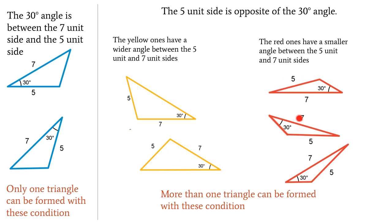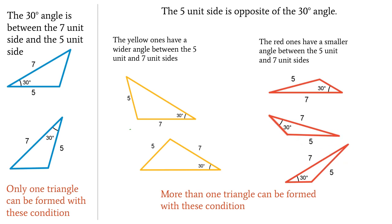The yellow and the reds have the five-unit side opposite the 30-degree angle. The difference is that the yellow triangles have a wider angle between the 5 and the 7, while the reds have a much smaller angle between the 5 and the 7. Therefore these conditions result in more than one triangle being formed.